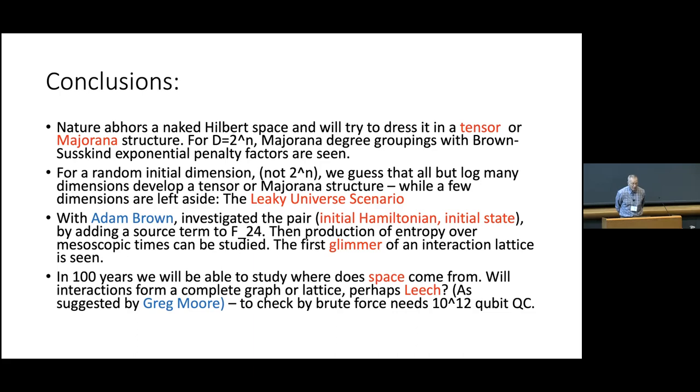So, first, going back to the very beginning, I would say nature abhors the naked Hilbert space and likes to dress it in either a tensor or a Majorana structure. And we did see the Brown-Susskind penalty metrics in a fermionic context. If you take a dimension not equal to the power of two, the physics, numerics, whatever you want to call it, tends to throw out what we expect to be log many dimensions to make a small tensor decomposition. By the way, let me just tell you a beautiful number theoretic fact that I learned from a number theorist here at Harvard.